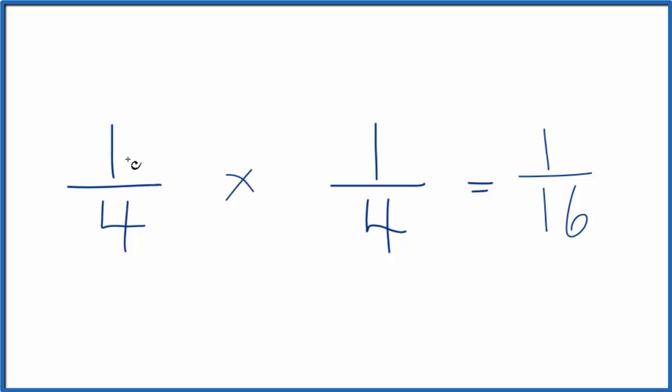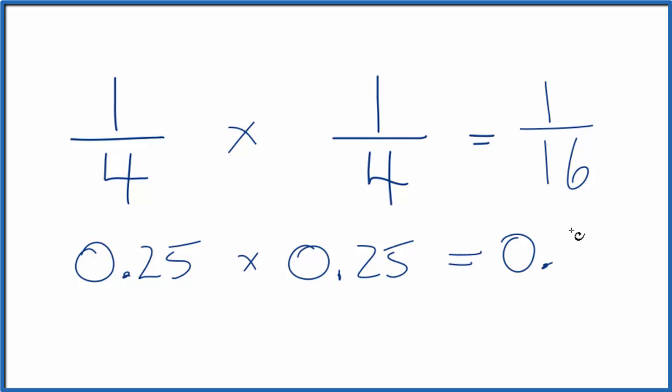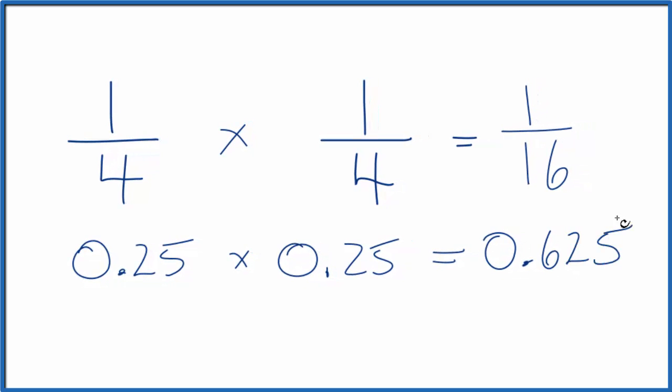You could also say 1/4 times 1/4 gives us 1/16. If we thought of this in decimals: 1 divided by 4 is 0.25, multiply that by 1 divided by 4, which gives us 0.625. If you divide 1 by 16, you get 0.625.